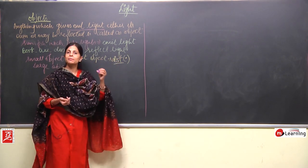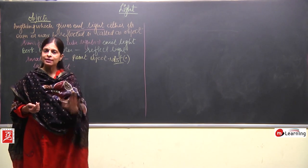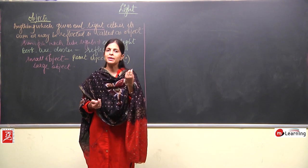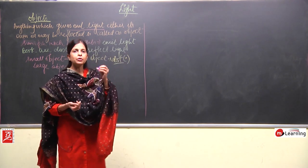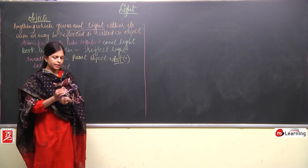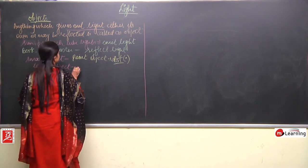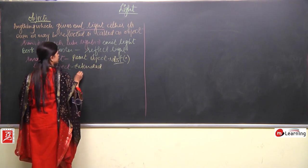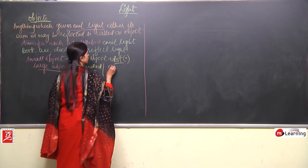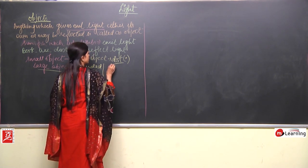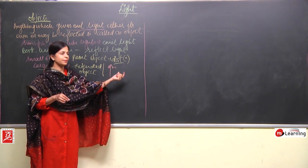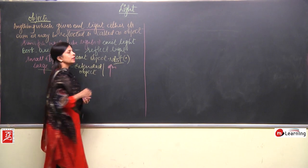In ray diagrams, objects play a very important role. We will sometimes use small objects or point objects. A point object is denoted by a dot. An extended object is denoted by an arrow, with the arrowhead always pointing upward. This is the way to denote an extended object.